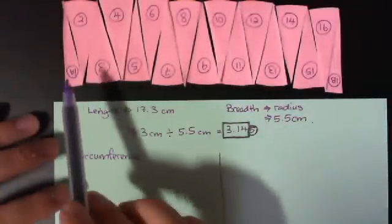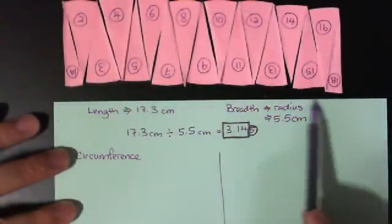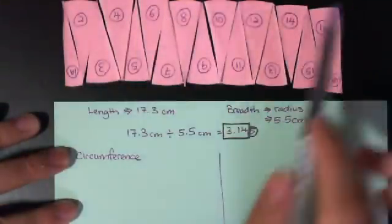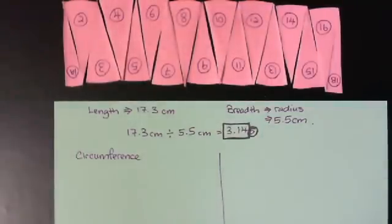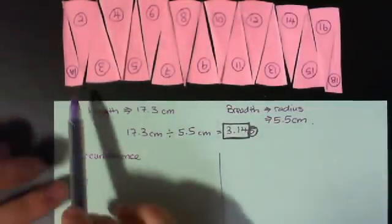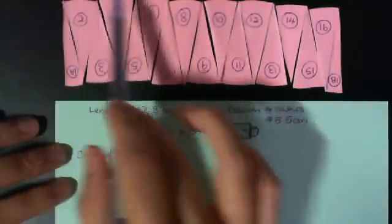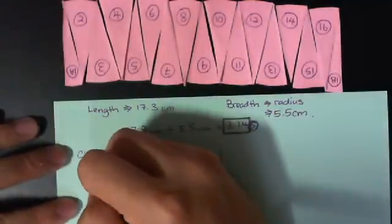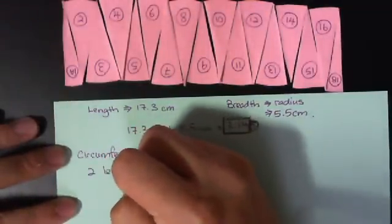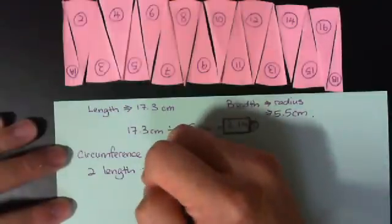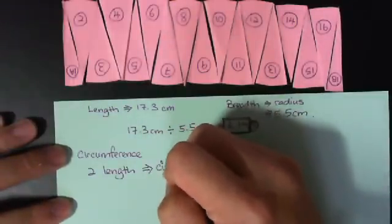Right. Now, so we know the whole length here and the whole length here is the circumference. Now, if that's the case, the length plus this length, so two length, this is of course the length of the rectangle, is the same as the circumference.